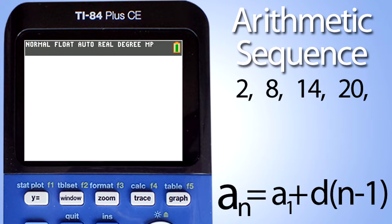There is an arithmetic sequence formula, which is a sub n equals a sub 1 plus d times n minus 1. The d is the difference from one number to the next number in the sequence of numbers, also called the common difference.